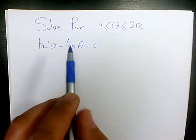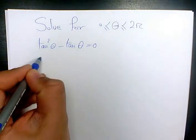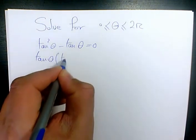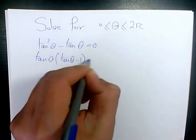So the first thing I want to do, I want to factor tan here because that's common between two terms. So factor tan is going to be tan theta times tan theta minus one equals to zero.